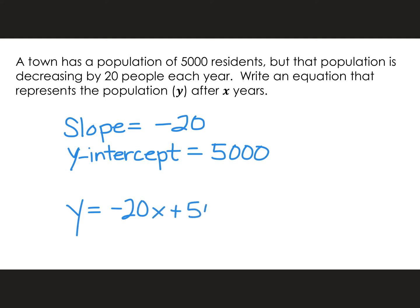However, there is another correct way to write this, and that is to put the y-intercept first. So I could say y equals 5,000 — that's what we started with — minus 20 residents per year.